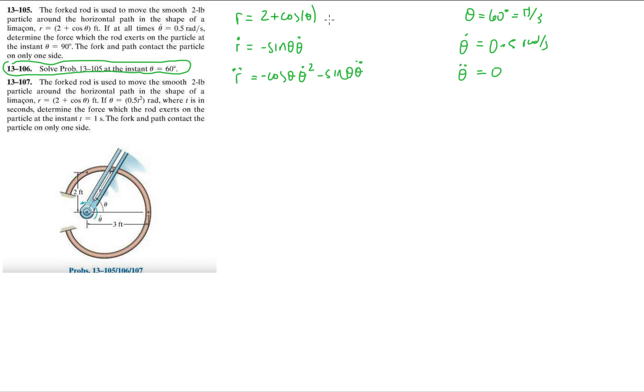When we evaluate the position velocity acceleration at 60 degrees now, not 90, we end up with r equals 2.5 feet, r dot equals minus 0.433 feet per second, and r double dot equals minus 0.125 feet per second squared. So here's our new position, velocity, acceleration of the particle.